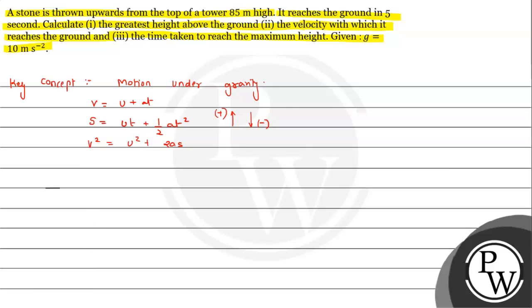This is the situation given. Let's suppose this is the tower, and the height given is 85 meters. The stone is projected upward from the top of the tower. We are interested in calculating from point 1 (top of tower) to point 2 (ground). The time is 5 seconds, and the displacement — the shortest distance between initial and final point — is 85 meters.